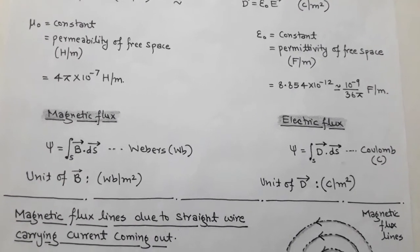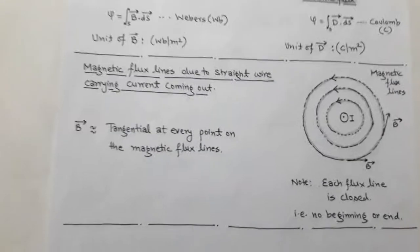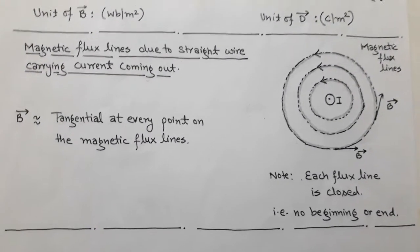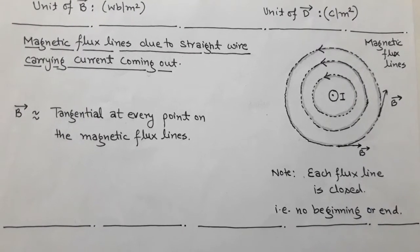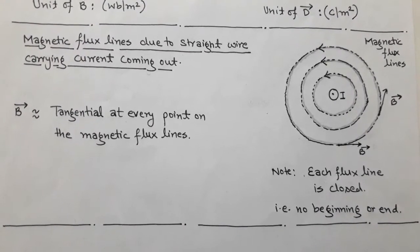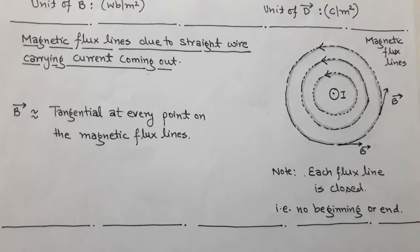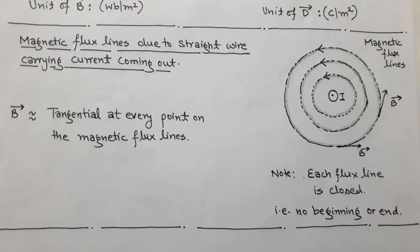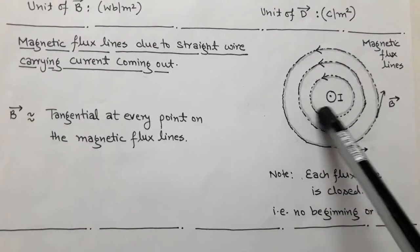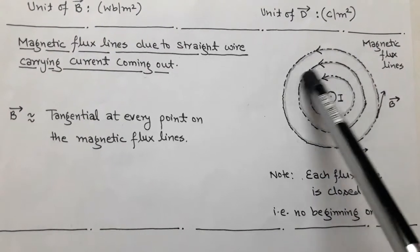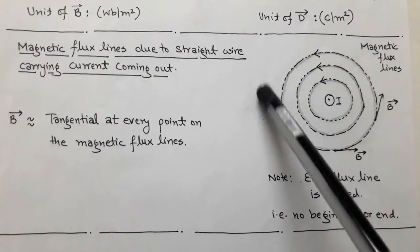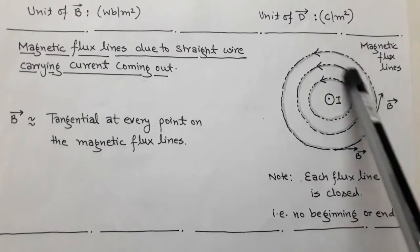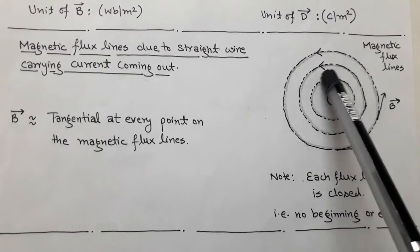In electrostatics, electric flux lines originate from positive charge and terminate at negative charge — meaning electric flux lines have a source point and an end point. But in the case of magnetic flux lines, there is no beginning or end. The magnetic flux lines are closed; there is no beginning point or end point.